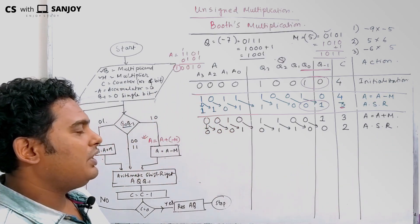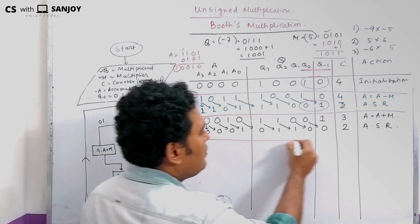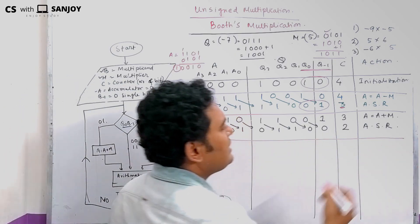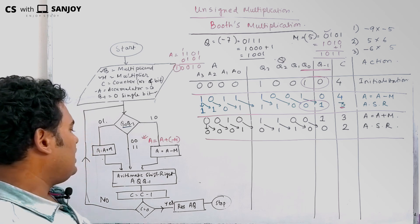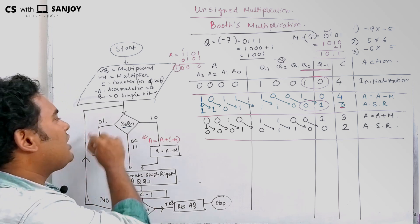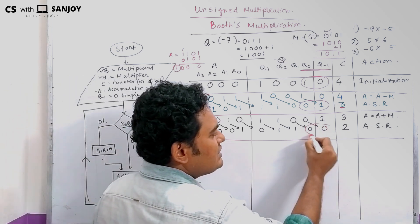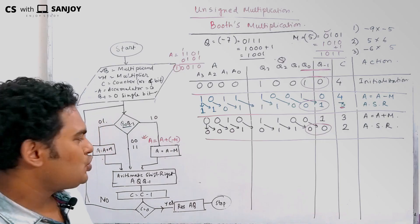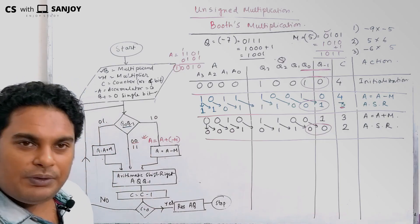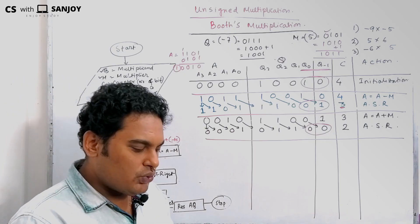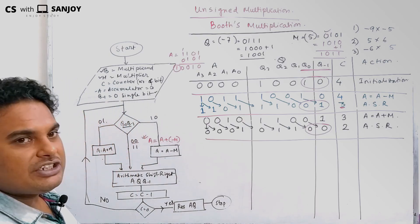Third step is complete. Now we check the counter value, which is 2 — not 0, so we continue. We observe the pair Q0 Q-1, and it is 0,0. Since 0,0 means neither A plus M nor A minus M, we simply do arithmetic shift right.